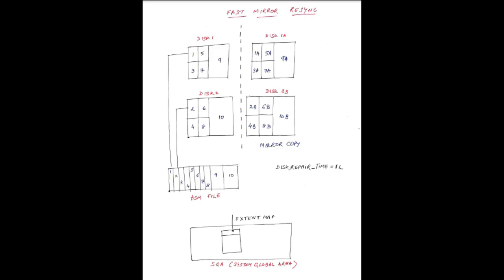There is a lot of information about the location of extents on disk. Oracle records this information — called the extent map — in memory automatically. If you ask where extent 5 of the ASM file is, it's in disk 1. Where is extent 6? It's in disk 2. Oracle keeps this extent map in a memory area called the Shared Pool, which is part of the SGA. The SGA also contains other structures like the DB Cache and Large Pool.